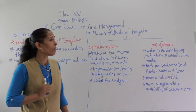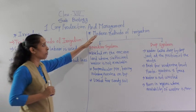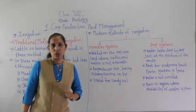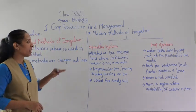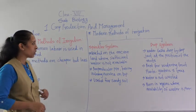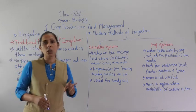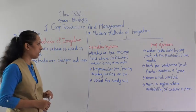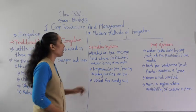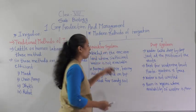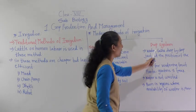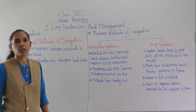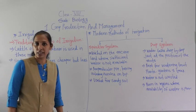Now we will discuss the modern methods of irrigation. There are basically two main types of modern methods of irrigation: one is the sprinkler system and the other is the drip system. We will discuss them one by one.